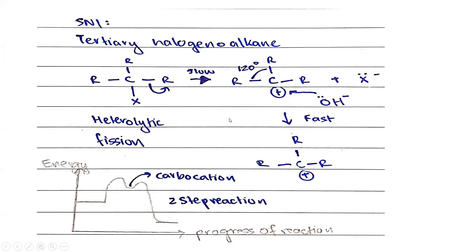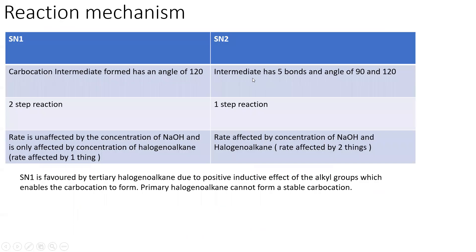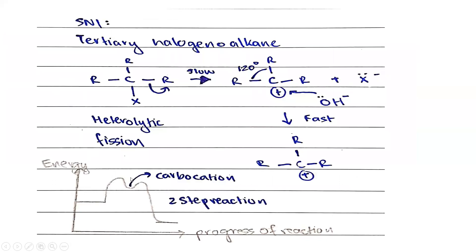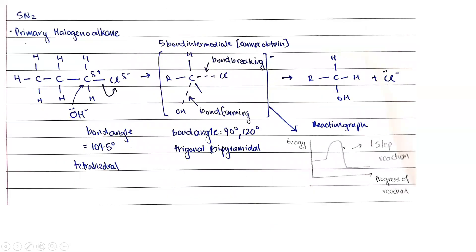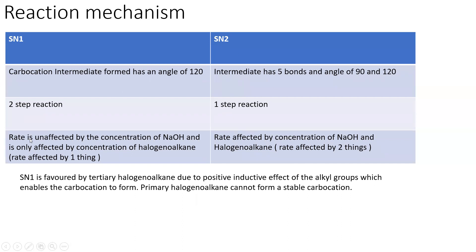Comparing the two mechanisms: SN1 forms a carbocation intermediate with a bond angle of 120° and three bonds; SN2 has a transition state with bond angles of 90° and 120° and five bonds. SN1 is a two-step reaction depicted by a graph with a hump; SN2 is a one-step reaction shown as a smooth curve. SN1 rate is unaffected by NaOH concentration and only depends on halogenoalkane concentration; SN2 rate is affected by both.